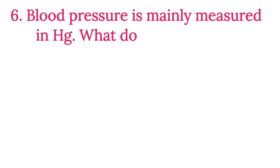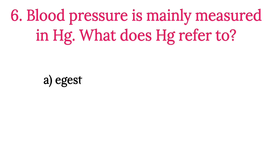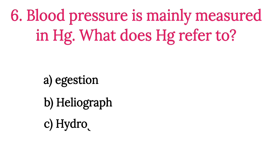MCQ Number 6: Blood pressure is mainly measured in mmHg. What does Hg refer to? Option A: Digestion. Option B: Heliograph. Option C: Hydrogen. Option D: Mercury. The correct option is Option D, Mercury.